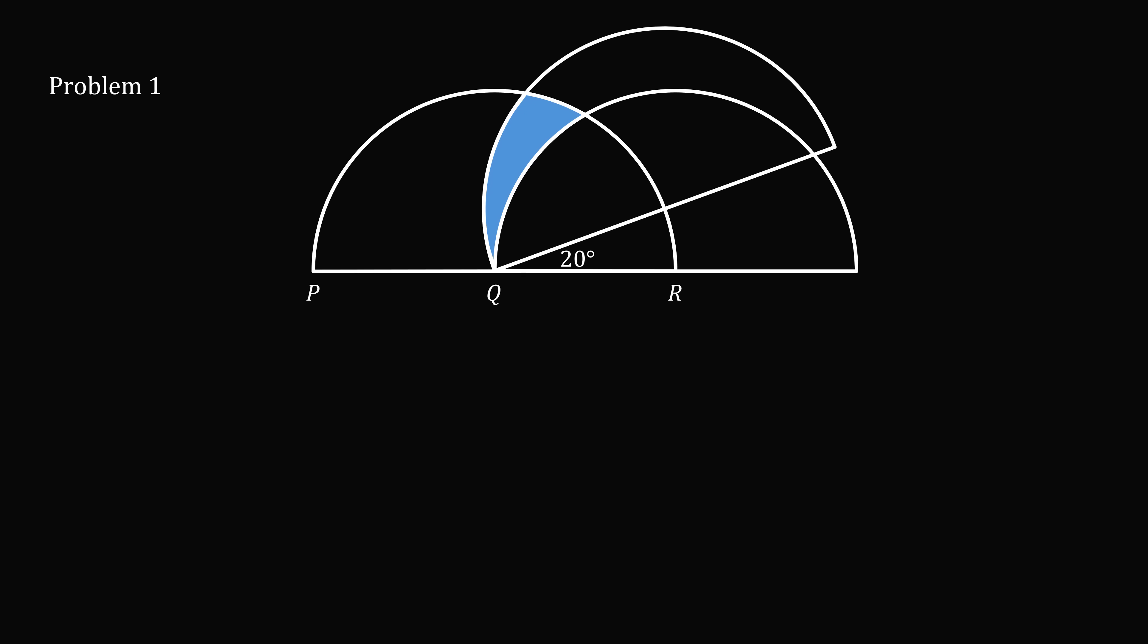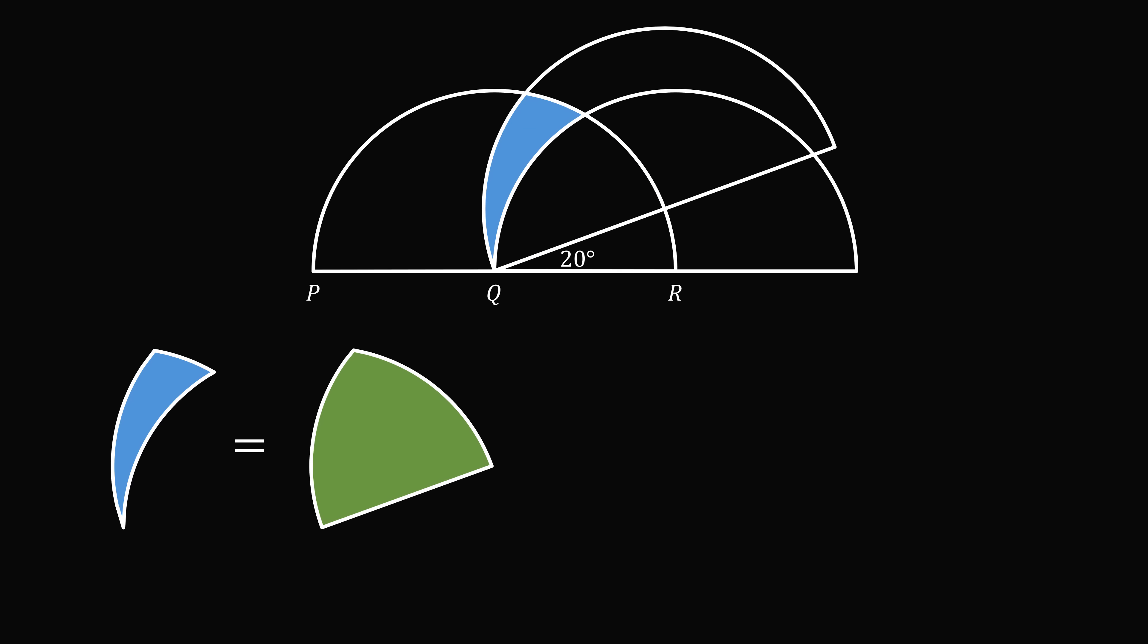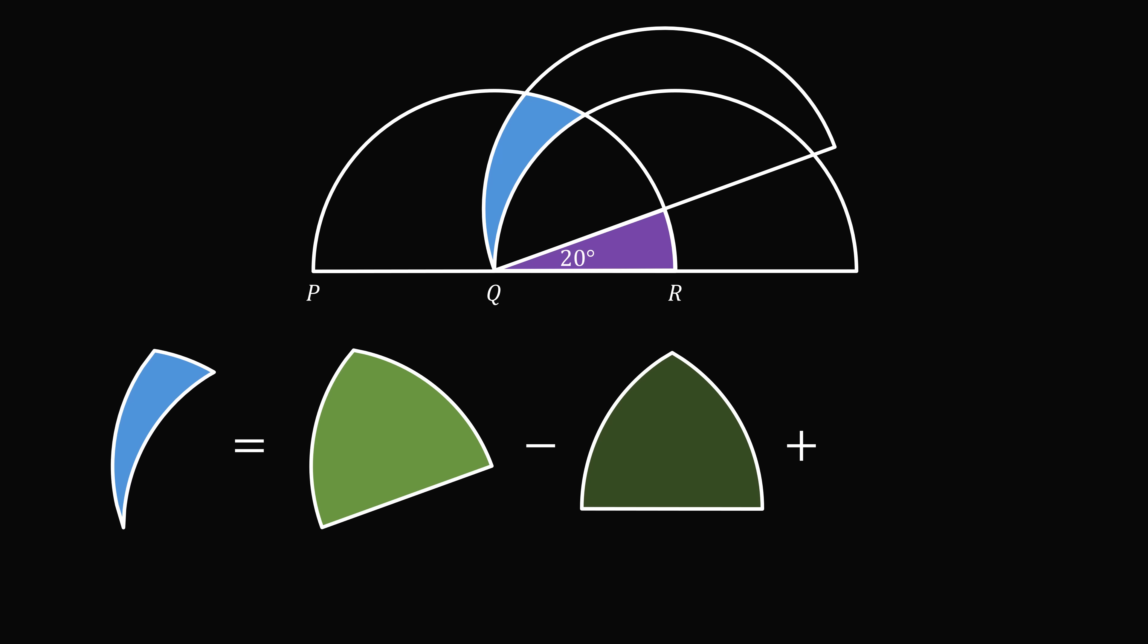Let's solve problem one. The area of this claw will be equal to the area of the common region between the flat semicircle and the tilted semicircle, minus the area that's common between the two flat semicircles. And then, we need to add back in this area, which we subtracted out. So, this is a 20 degree sector.